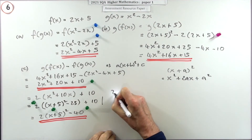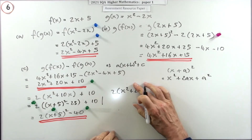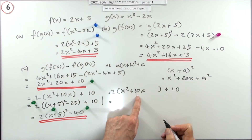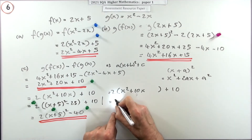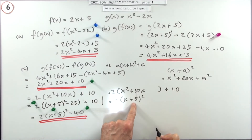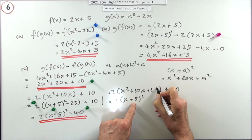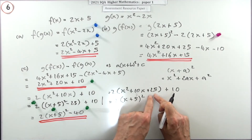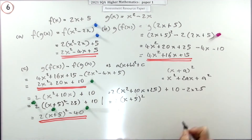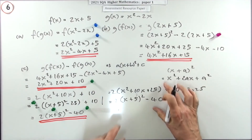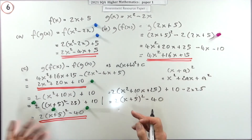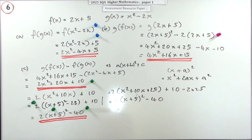Another way of setting this out: take the 2 out, leaving x squared plus 10x, and put the 10 to the side. Then think: what would it take to complete that square? I know x squared plus 10x would give x plus 5 all squared, but that produces a 25. I'd have to have a 25 in here to make that work — but that's an introduced 25, and it's two of them, so I'd have to take away two of those 25s, giving minus 40. It's just a way of compressing the working into two lines instead of three.